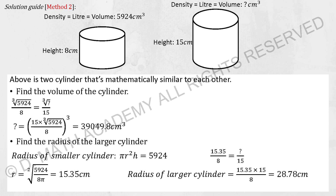To calculate the radius, repeat the same method: smaller cylinder radius over its height equals bigger radius over 15. After calculation, you get the same result of 28.78.